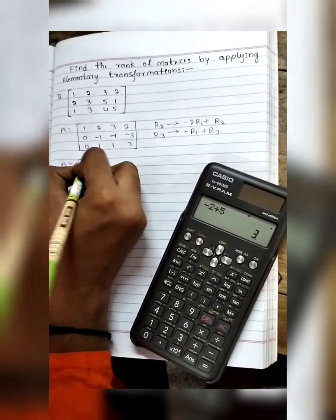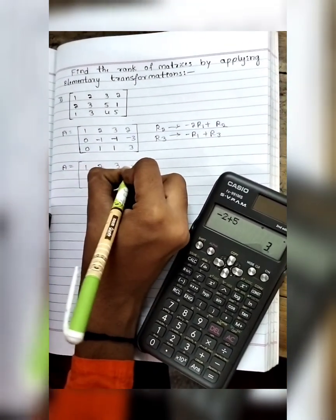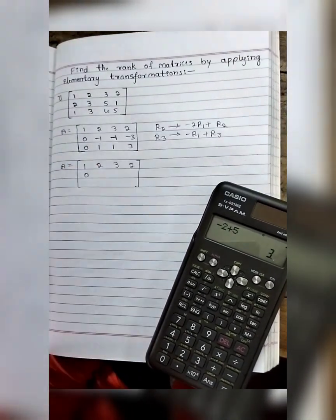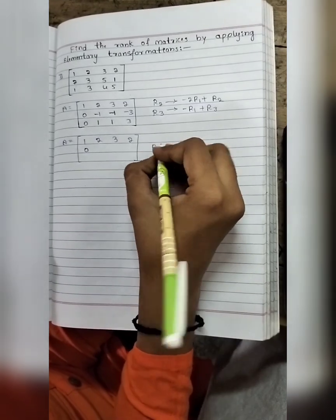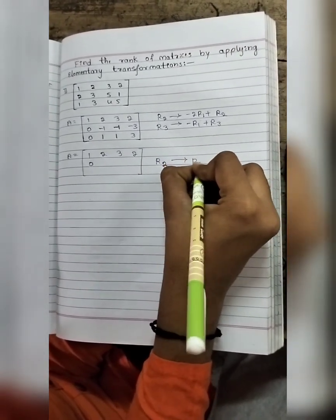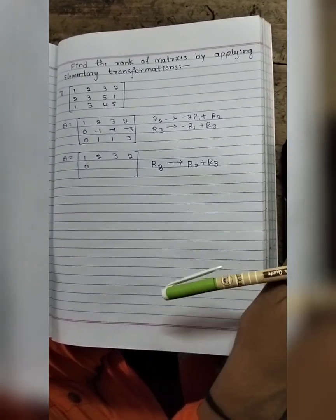Now R1 and R2 are written as is: 1, 2, 3, 2; 0, minus 1. Apply the elementary transformation on R3. R3, R2 plus R3.